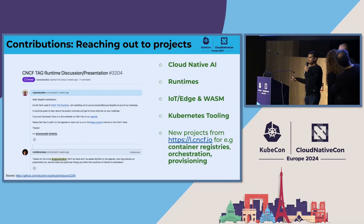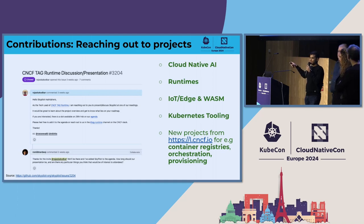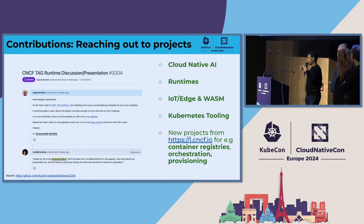One easy trick is to go to landscape.cncf.io, figure out projects which are not part of CNCF but listed on the landscape, and try reaching out to them — mostly from container registries, orchestration, provisioning, things like that.